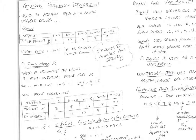We looked at frequency distributions, and sometimes it's better to group the data into more usable groups. So instead of looking at how many students got one mark, two marks, three marks, and so on, it's better to group the data into how many students got between one and five, six and ten, eleven to fifteen, sixteen to twenty, twenty-one to thirty-five. It's more usable that way. And so often we group the data like this.